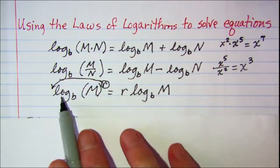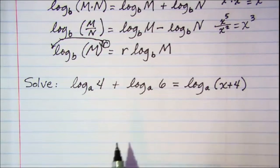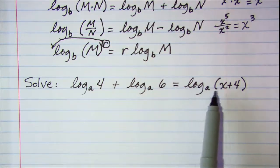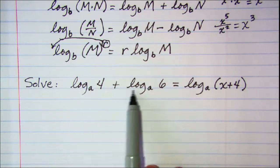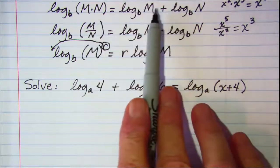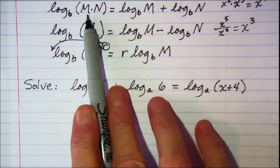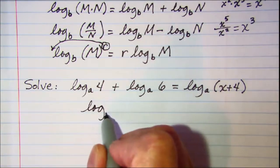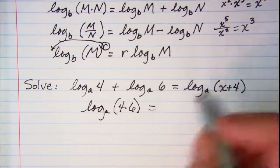Now let's do a few equations. Our first one: we have log base a of 4 plus log base a of 6 is equal to log base a of the quantity x plus 4. On the left side we have the sum of two logarithms. Using the first law in reverse, the sum of two logs can be written as the log of the product of those arguments. So the left side can be rewritten as the log of the product 4 times 6, and I'll leave the right side alone for now.